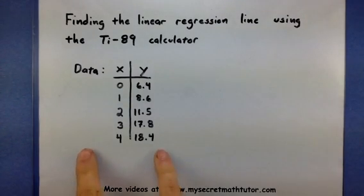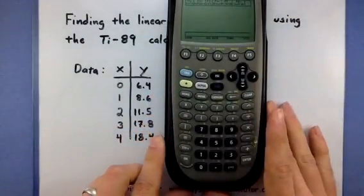One, we're going to enter all of this data into the calculator. Two, we're going to make sure that the calculator does all the heavy lifting and calculates that linear regression line. And three, we're going to take a look at the data it gives us and interpret it as best we can. So watch what buttons I press in order to accomplish this. Go ahead and grab your calculators and let's get to work.